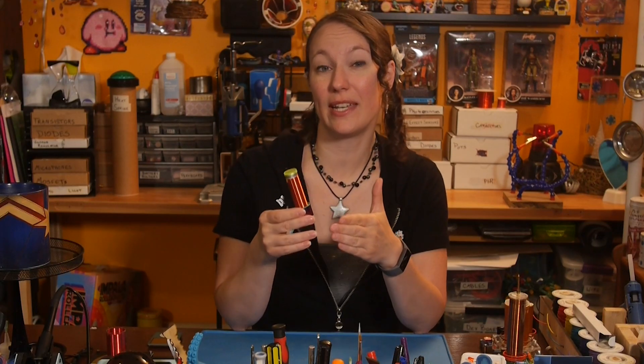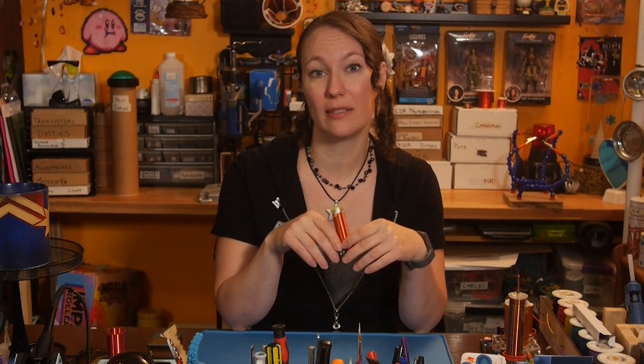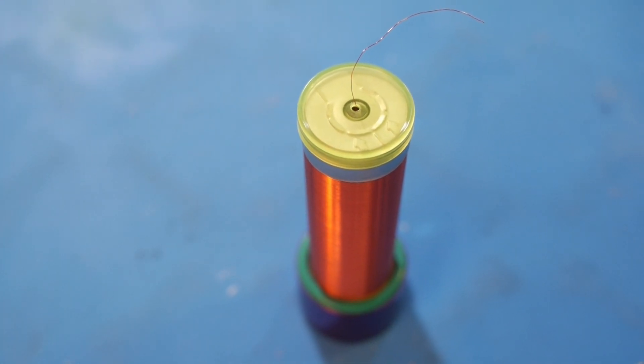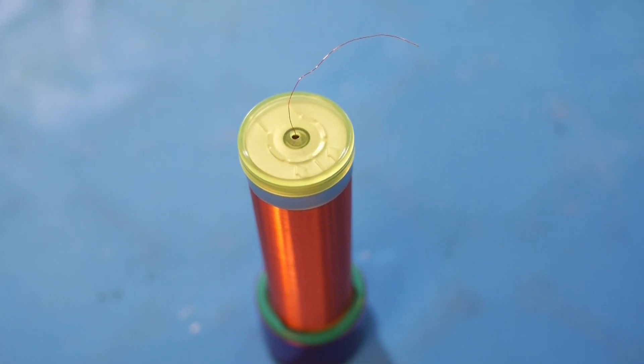But rather than getting into the science of how these work, which you can just read about on Wikipedia, instead, let's just get to playing. I'll start with the simplest Tesla coil. This one is very sleek, with the entire circuit in the base below the tall secondary coil, and it simply operates off a 5-volt USB plug. If you look closely at the top of the coil, you can hopefully see the end of the wire. The secondary coil is actually open. One end is disconnected. Let's plug it in and see what happens.